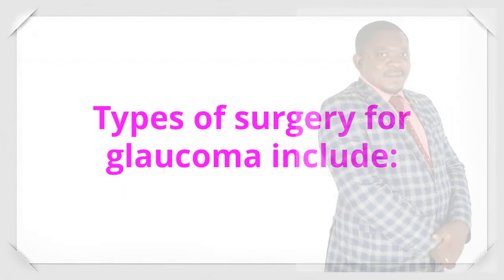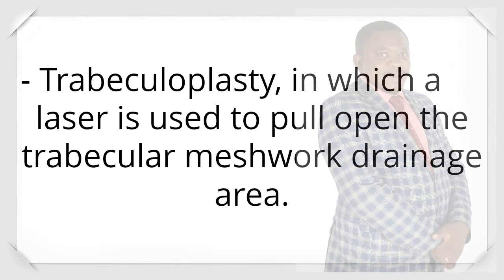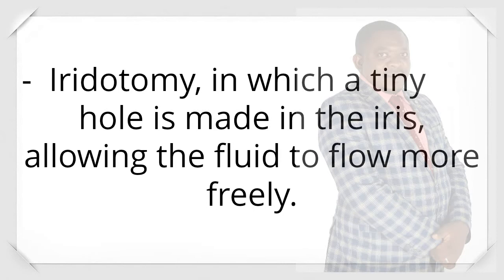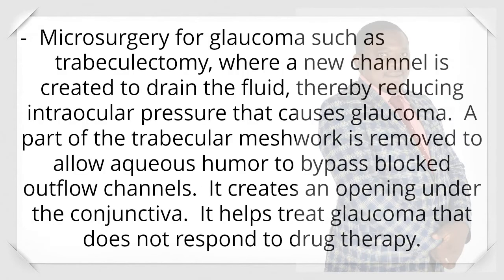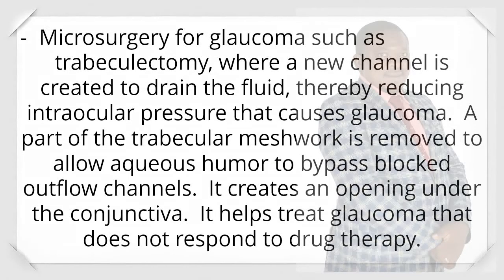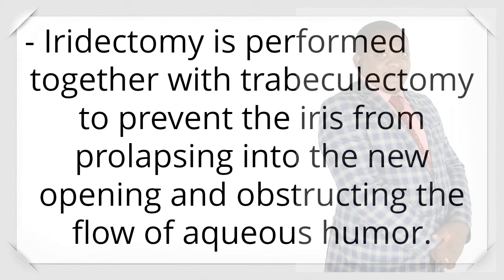Types of surgery for glaucoma include trabeculoplasty, in which a laser is used to pull open the trabecular meshwork drainage area; iridotomy, in which a tiny hole is made in the iris allowing the fluid to flow more freely; cyclophotocoagulation, in which a laser beam treats areas of the middle layer of the eye, reducing the production of fluid. Microsurgery such as trabeculectomy creates a new channel to drain the fluid, thereby reducing intraocular pressure. A part of the trabecular meshwork is removed to allow aqueous humor to bypass blocked outflow channels, creating an opening under the conjunctiva. Iridectomy is performed together with trabeculectomy to prevent the iris from prolapsing into the new opening and obstructing the flow of aqueous humor.